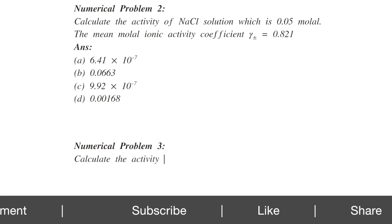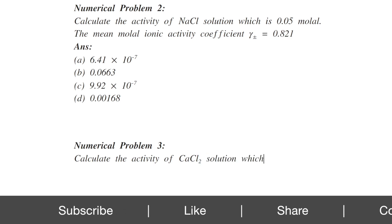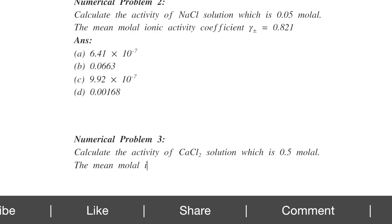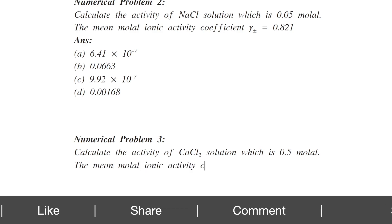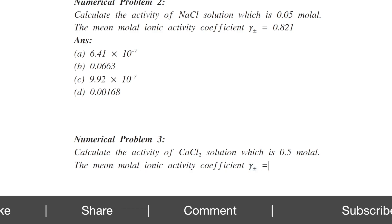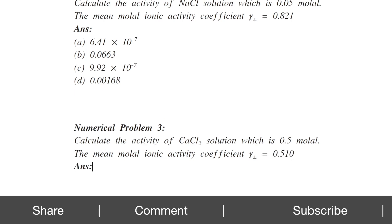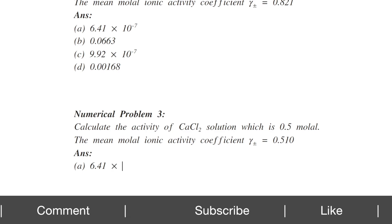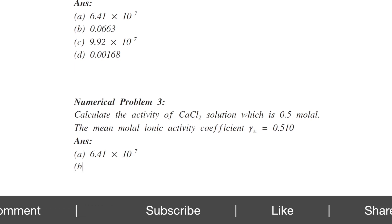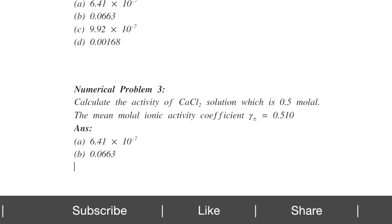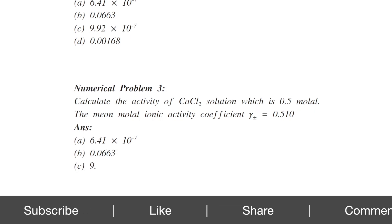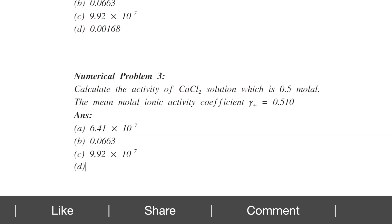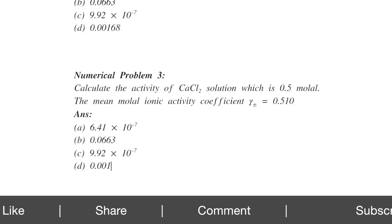Next example: Calculate the activity of a calcium chloride solution that is 0.5 molal, with mean molal ionic activity coefficient Gamma equals 0.510. Calcium chloride is a uni-bivalent electrolyte. Possible answers: A) 6.41×10⁻⁷, B) 0.0663, C) 9.92×10⁻⁷, D) 0.00168.